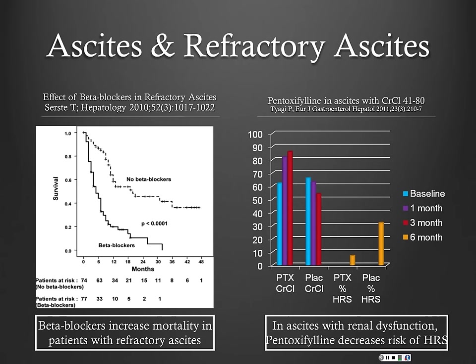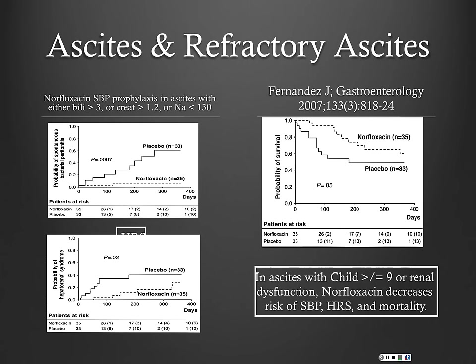The other medicine is Trental, or pentoxifylline. We like to use this in many of our cirrhotics even without acute alcoholic hepatitis. There's actually pretty good data that it's renal-protective in patients with refractory ascites — it decreases the risk of developing hepatorenal syndrome through mechanisms we don't fully understand. If a patient has low creatinine clearance and large-volume ascites, think about Trental as adjunct therapy.